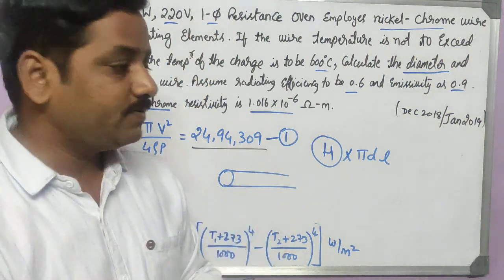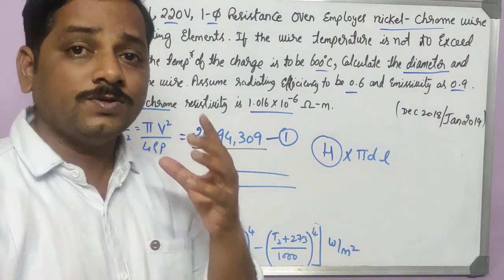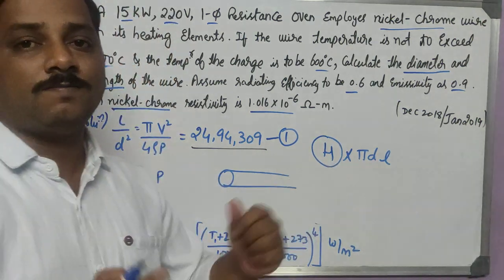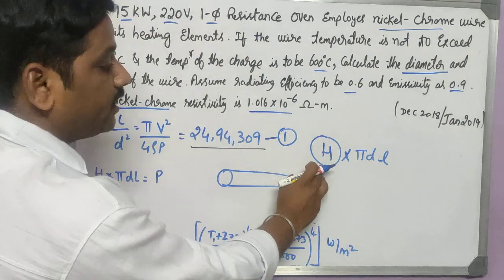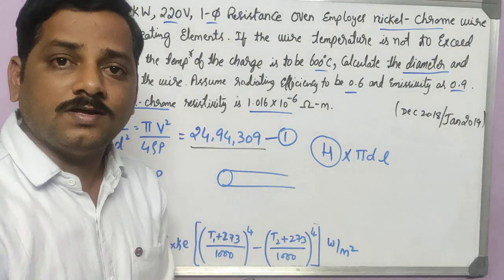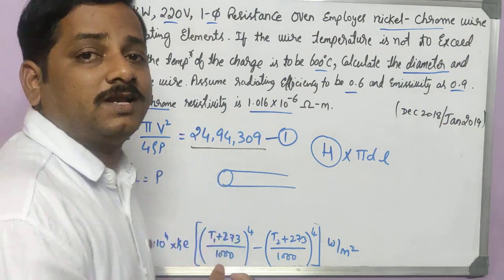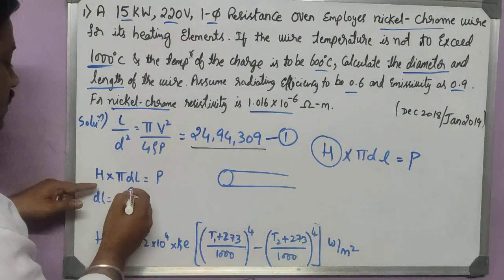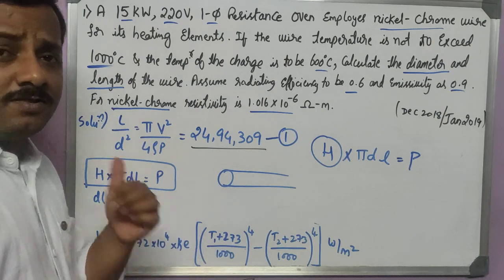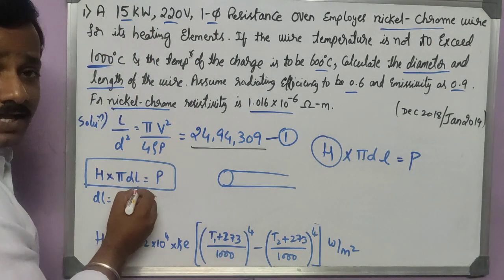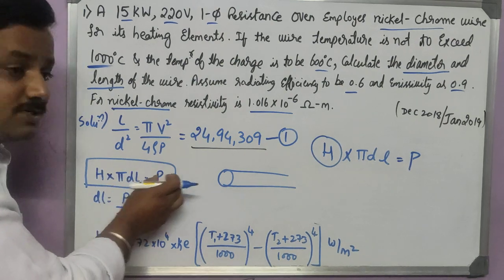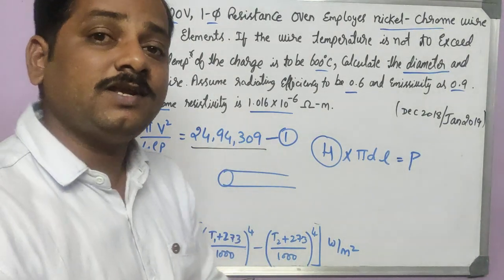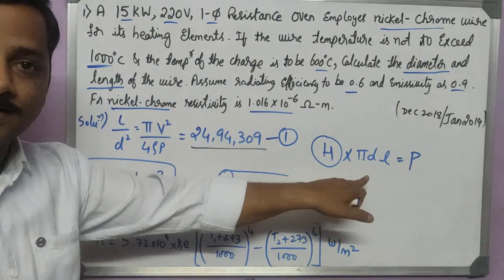If you have a circular type of coil, the surface area can be given as pi d L. If it is a strip, we get a different formula. That's why you need to identify whether you are finding a circular wire or designing for a strip. Based on that, the formula will change. Heat liberated per unit area into total area gives total heat liberated, and that should equal the power given. So H into pi dL equals P. That's what I have mentioned here. I will simplify this and get information for dL.